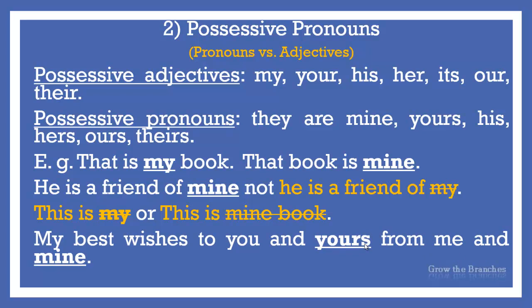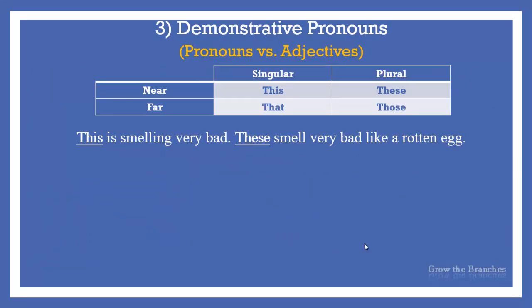Here, yours means your family and mine means my family. Demonstrative pronouns, like all pronouns, are used without a noun. Demonstrative adjectives, however, always precede a noun. A demonstrative pronoun is a pronoun which we use in the sentence to point something specific such as items in space or in time.